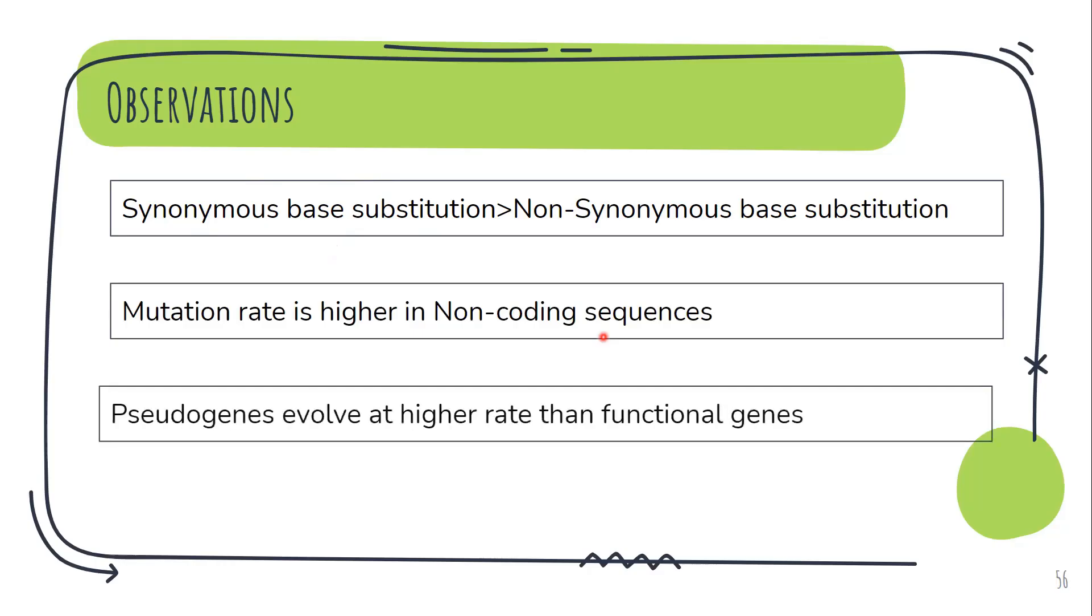Lastly, in comparison to functional genes that actually have a particular function or code for something, evolve very slow as compared to pseudogenes. So pseudogenes are those that do not have any functional role. They evolve at a higher rate than the functional genes. Now all of these observations prove that the neutral mutations do have some role to play.